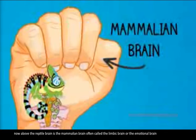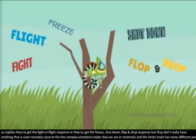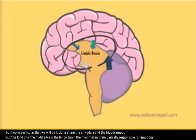Above the reptile brain is the mammalian brain, often called the limbic brain or the emotional brain. Reptiles have the fight-or-flight response or the freeze, shutdown, flop-and-drop response, but they don't have anything close to the complex emotional states we see in mammals. The limbic brain has many parts, but two in particular we'll focus on are the amygdala and the hippocampus — this middle brain is basically responsible for emotions.